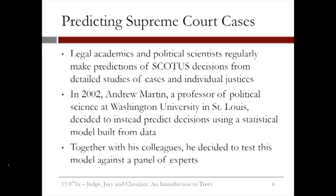Since nonprofits, voters, and anybody interested in long-term planning can benefit from knowing the outcomes of Supreme Court cases before they happen, legal academics and political scientists regularly make predictions of Supreme Court decisions from detailed studies of the cases and individual justices. In 2002, Andrew Martin, a professor of political science at Washington University in St. Louis, decided to instead predict decisions using a statistical model built from data. Together with his colleagues, he decided to test the model against a panel of experts, to see if an analytical model could outperform the expertise and intuition of a large group of experts.